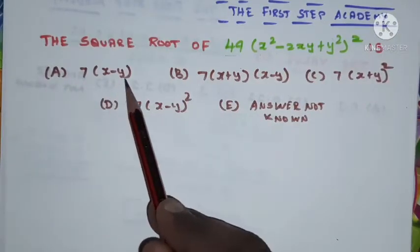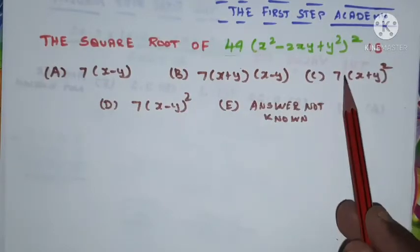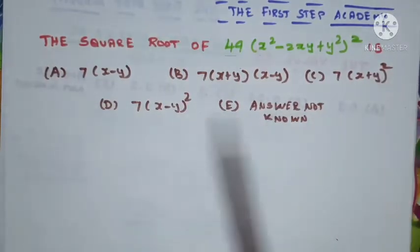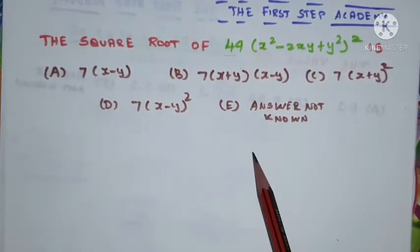Option C, 7 into (x plus y) whole squared; option D, 7 into (x minus y) whole squared; option E, answer not known.